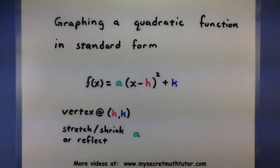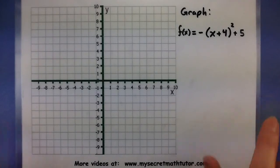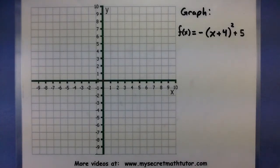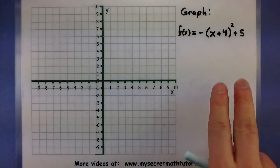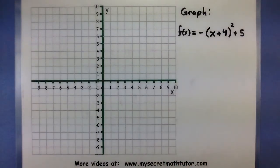Let's do a couple of quick examples so you can see this thing in action. So I want to graph f of x equals negative x plus 4 squared plus 5. The very first thing I'm going to do is I'm going to use these two values to figure out where my vertex is.